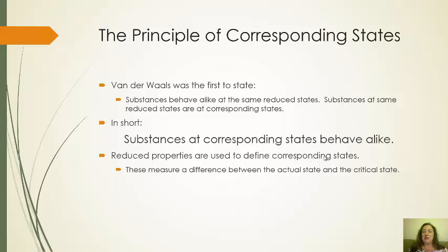Substances at same reduced states are at corresponding states. So in short, substances at corresponding states behave alike. How do you define a corresponding state? Through reduced properties. Reduced properties are a way of measuring how different the actual state is from the critical state. So the key thing is knowing what the critical state is.